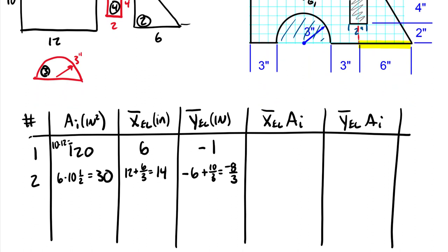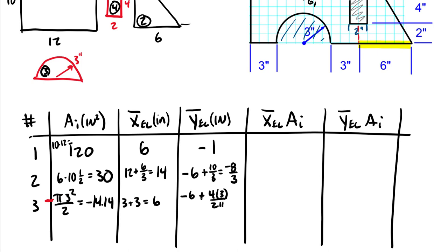Shape three is the half-circle cutout. Area = −πr²/2 = −π(3²)/2 = −14.14 in² (negative because it's a cutout). The x centroidal distance is 3 + 3 = 6 inches. The y centroidal distance is −6 + 4r/(3π) = −6 + 4(3)/(3π) = −4.727 inches.